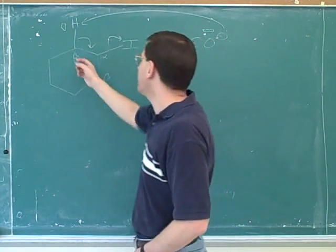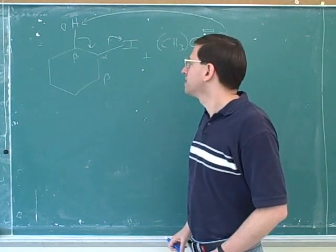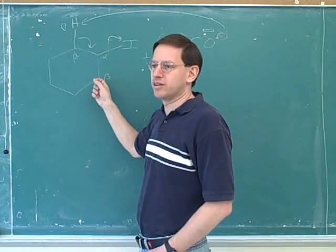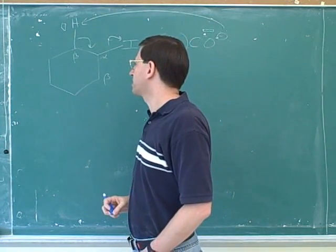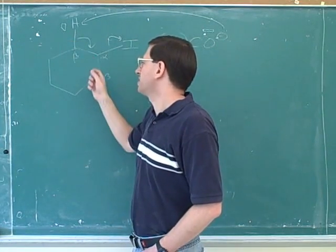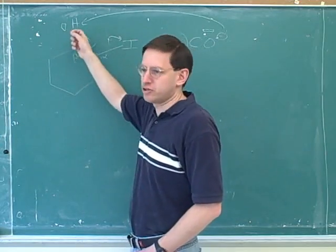Now, you also notice that there's two beta carbons here. So I think that you were trying to draw two different mechanisms for the two different attacks. That's a good instinct. However, notice that these two are basically symmetrical to each other. We're going to get the same product either way. Actually, it might be a good exercise to prove that to yourself by drawing it. But to save time, we're going to get the same product if we attack either beta carbon here because it's a symmetrical molecule. So we'll save time and only draw one product.